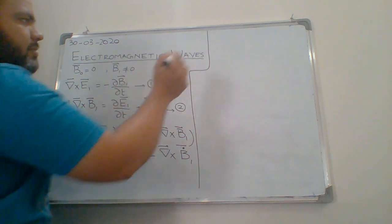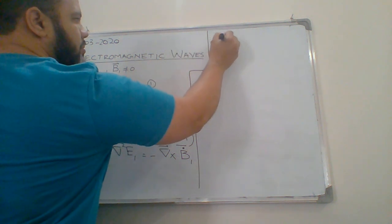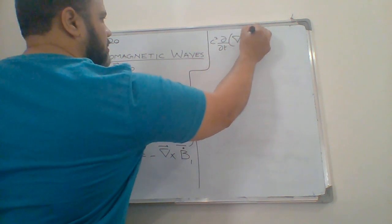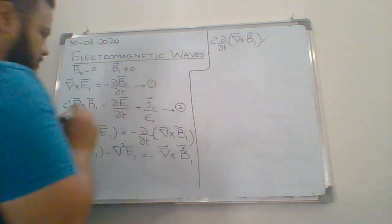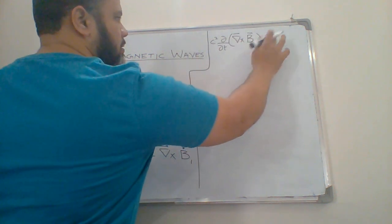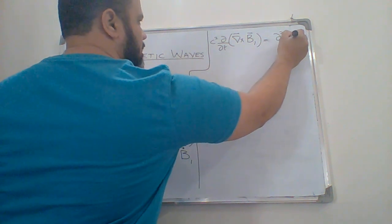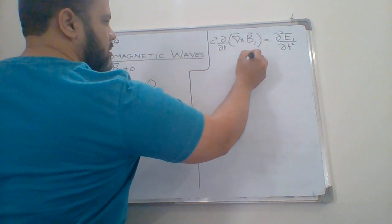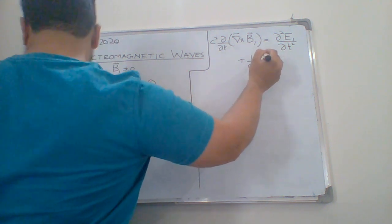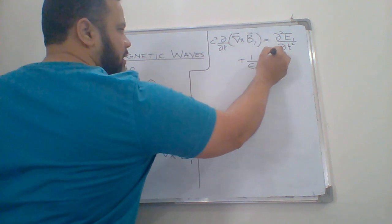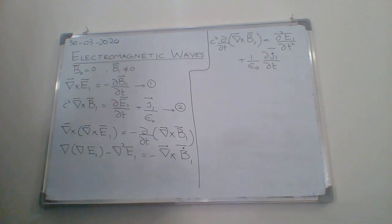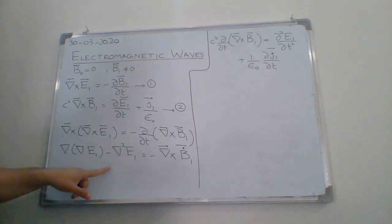By taking the time derivative of equation 2, C squared del cross B1 dot equals partial squared E1 by partial t squared plus 1 over epsilon naught times partial J1 by partial t. Now we substitute this value into the previous equation.